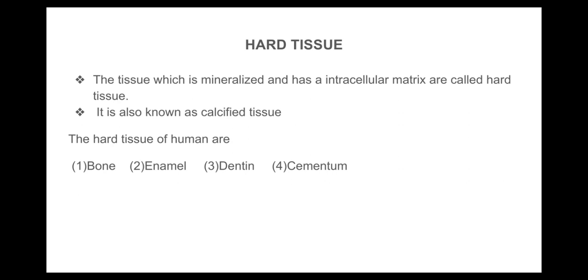The hard tissues of the human body are: first, bone; second, enamel; third, dentine; and last, cementum.